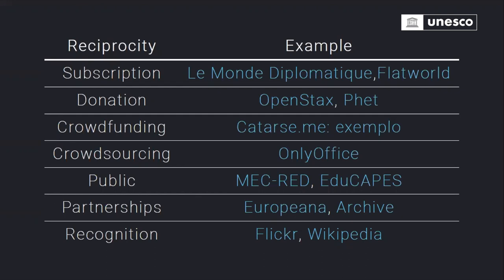There's the donation model — platforms have sustained themselves through large donations from foundations and government, but also small donations. OpenStacks and PHET are good examples, with PHET having a long track record of providing quality open content for physics and math online. Crowdfunding has been a great example for small publications and educational materials — documentaries, children's books, platforms. Catarse is a crowdfunding platform in Brazil, and there are many around the world with successful examples of people funding educational content.